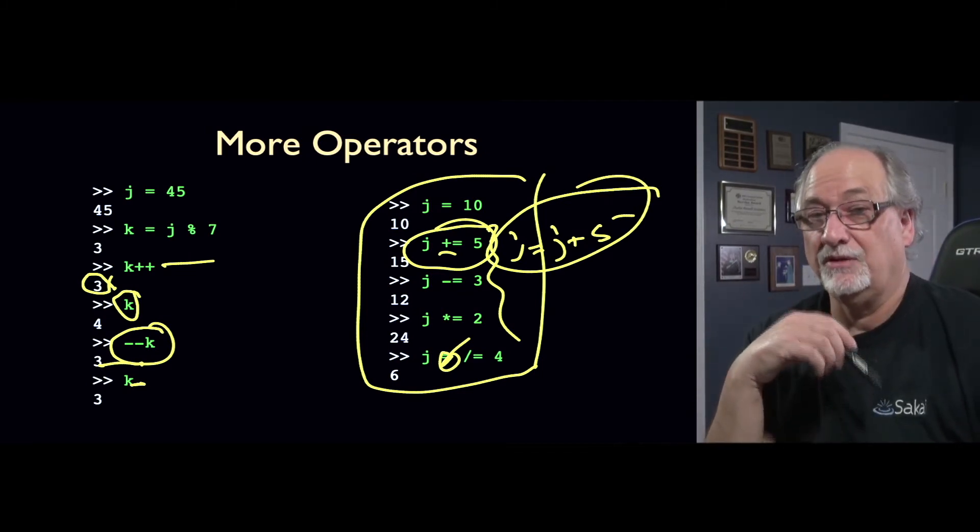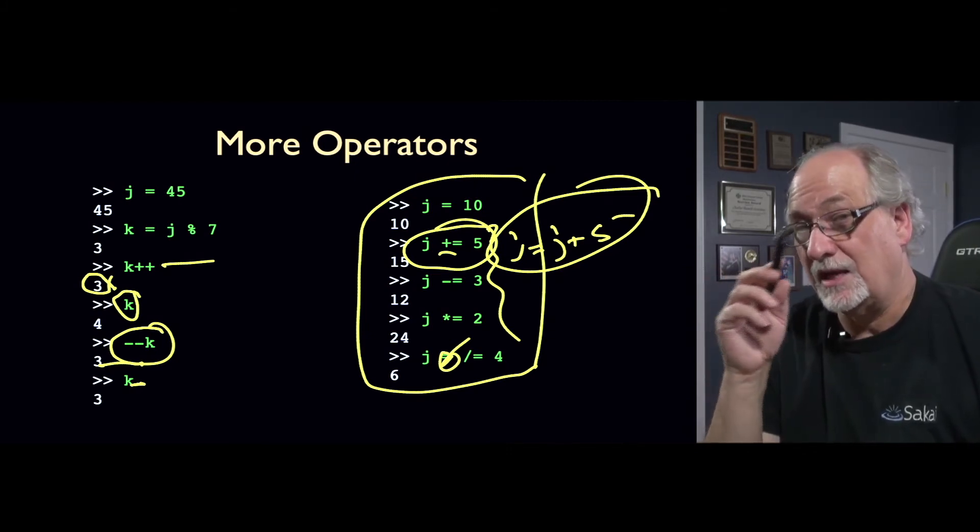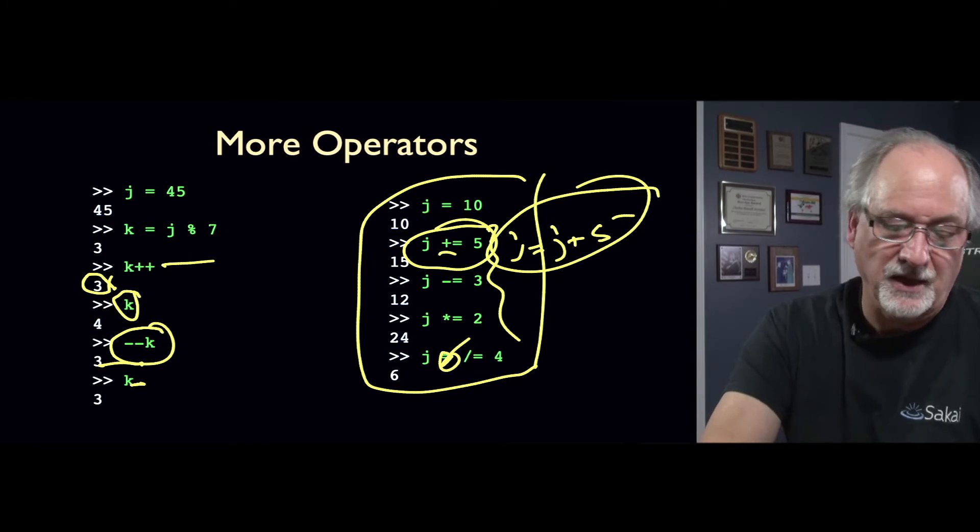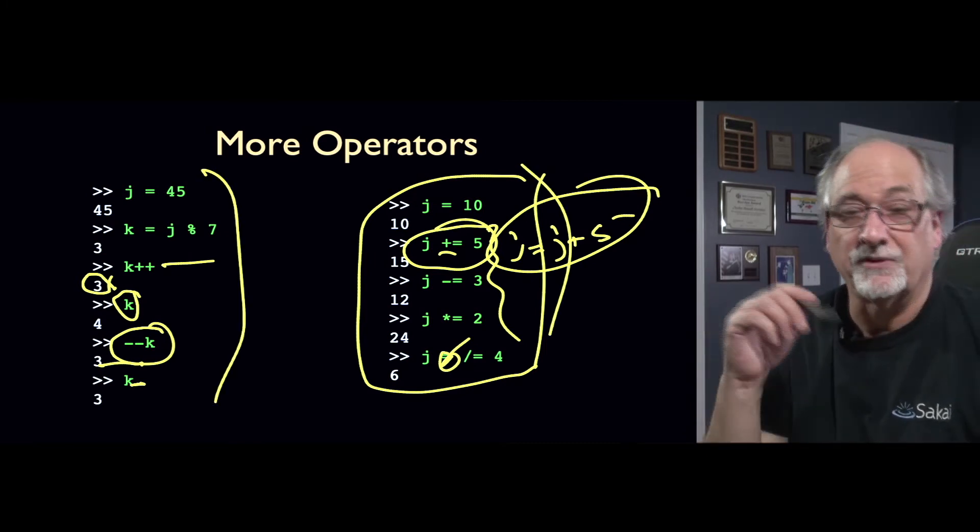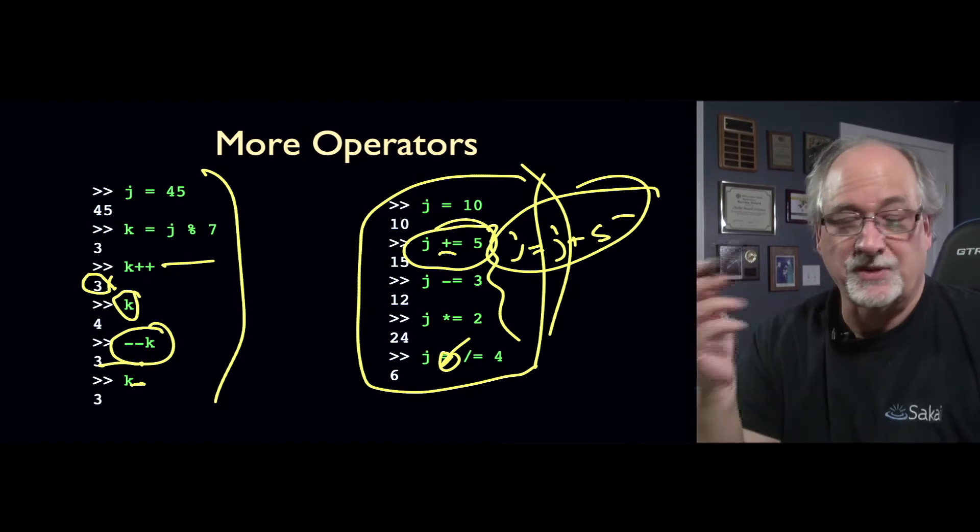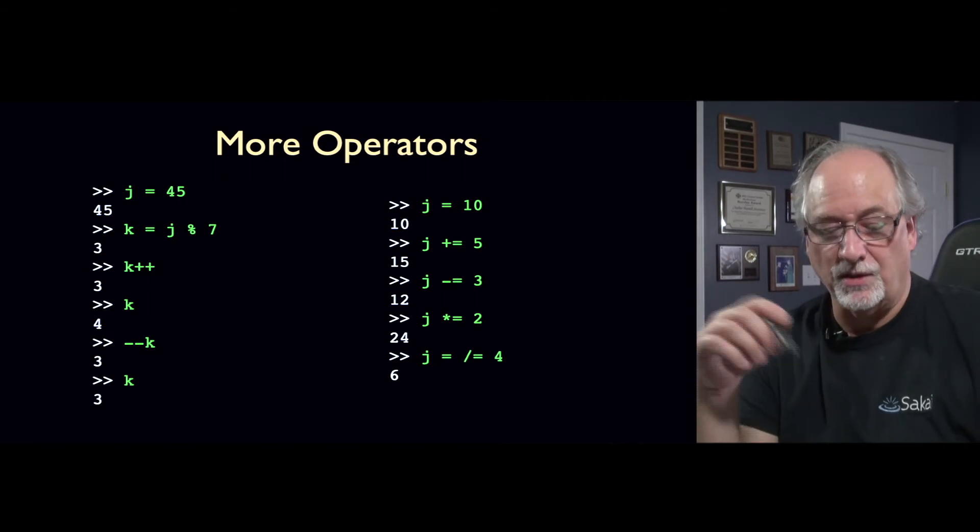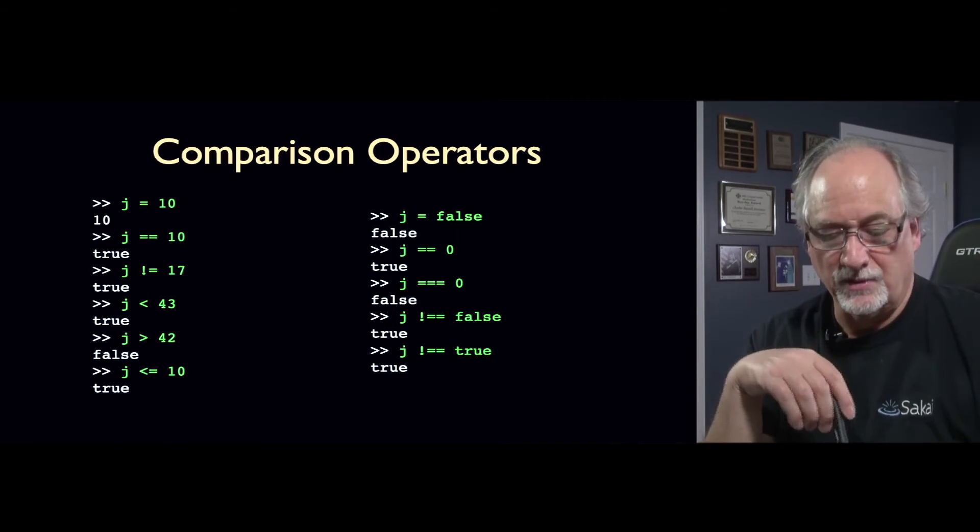This comes from C. All of these fancy bits come from the C language. And JavaScript was just, and Java do the same thing. And so those two languages are represented here. And so, that's why these operators are here.